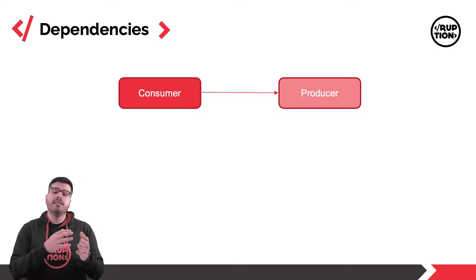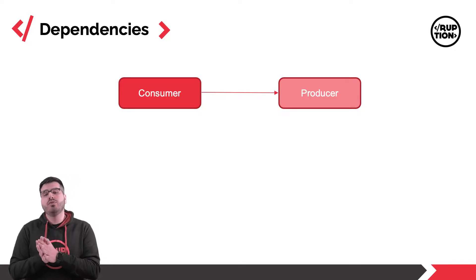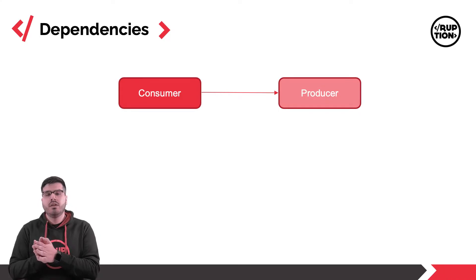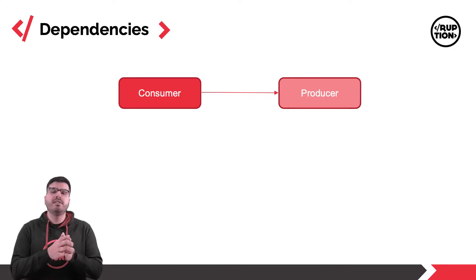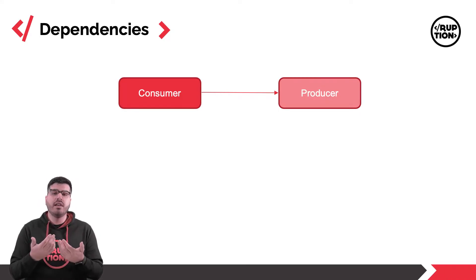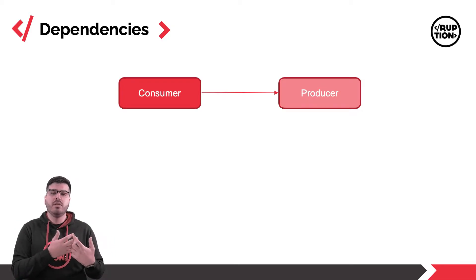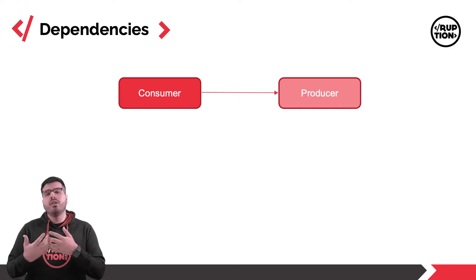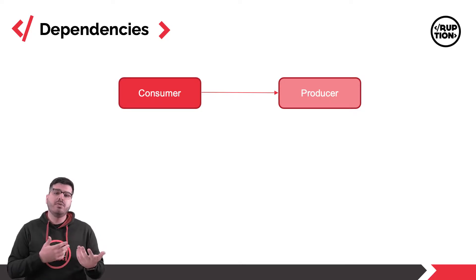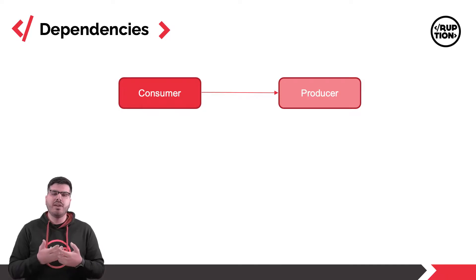In each dependency link we always have two modules: the consumer and the producer. The producer usually is the module that is below or sideways in terms of architecture to the consumer, to maintain referential integrity, something that we have already talked about. There are a lot of elements that we can reference in OutSystems, so let's take a look at what elements create what dependency types.